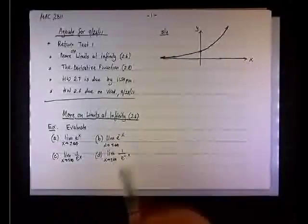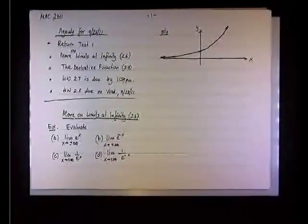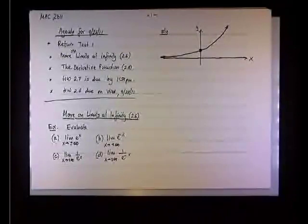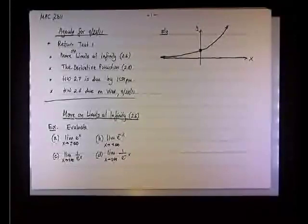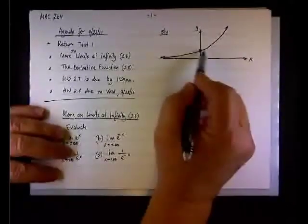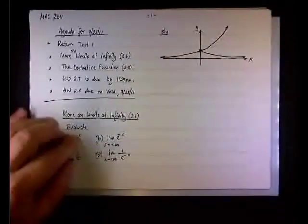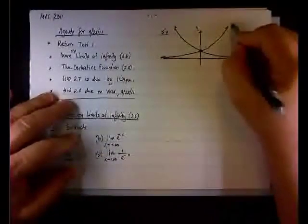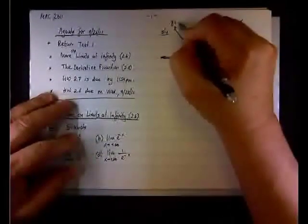What about the counterpart — e to the negative x? Well, this is a decay, with a decay rate being negative one. When x equals zero, e to the negative zero is still one, so we have the same y-intercept. When x is a positive number, say x equals one, then e to the negative one is one over e, or one over 2.7-something — a fraction. When x equals 100, e to the negative 100 is one over e to the 100, a number close to zero. So here we have an asymptote as x approaches positive infinity. This is y equals e to the x, and this is y equals e to the negative x.